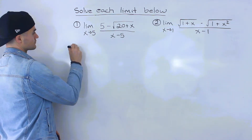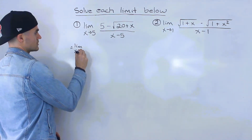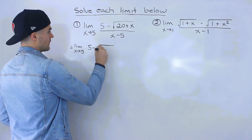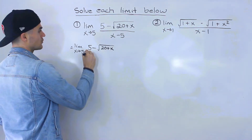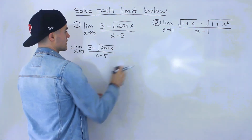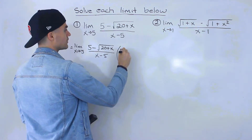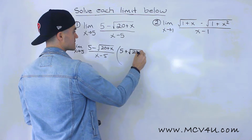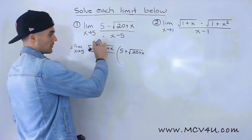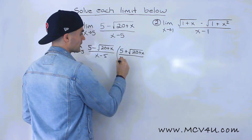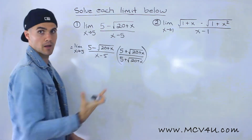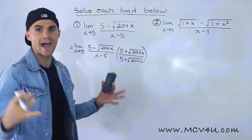The way we do that is we need to get rid of this square root somehow, and the way we do that is we multiply the numerator by its conjugate, which would be (5 plus root of 20 plus x). We keep the ends the same and just change the middle sign. Since we multiply the numerator by that, we've got to multiply the denominator by that as well — it's like multiplying the entire expression by 1, so the expression stays the same.